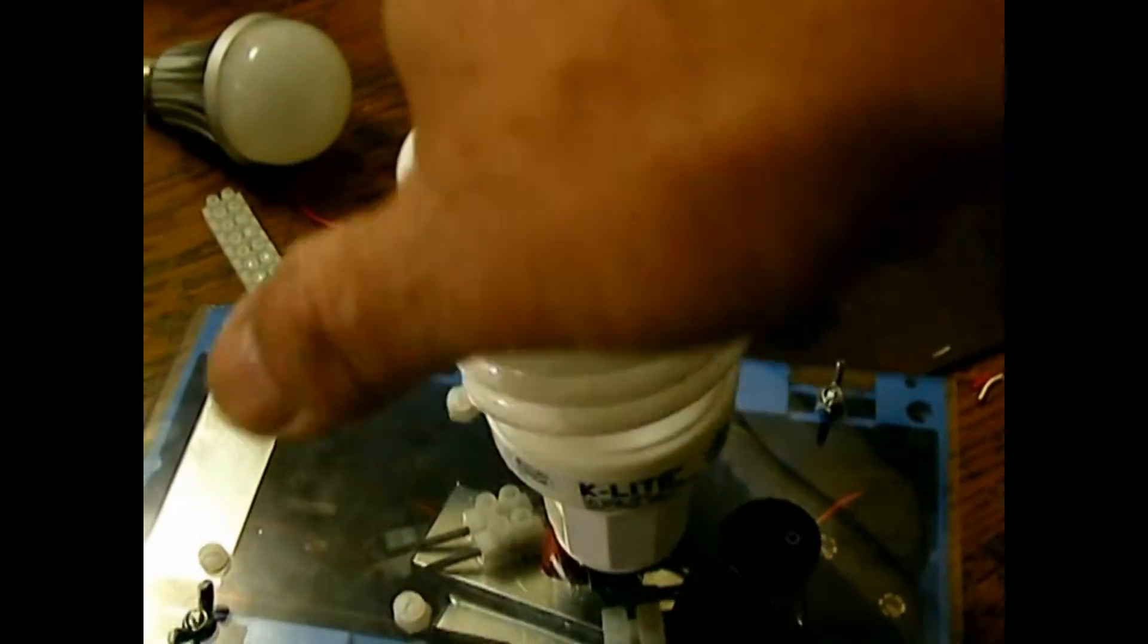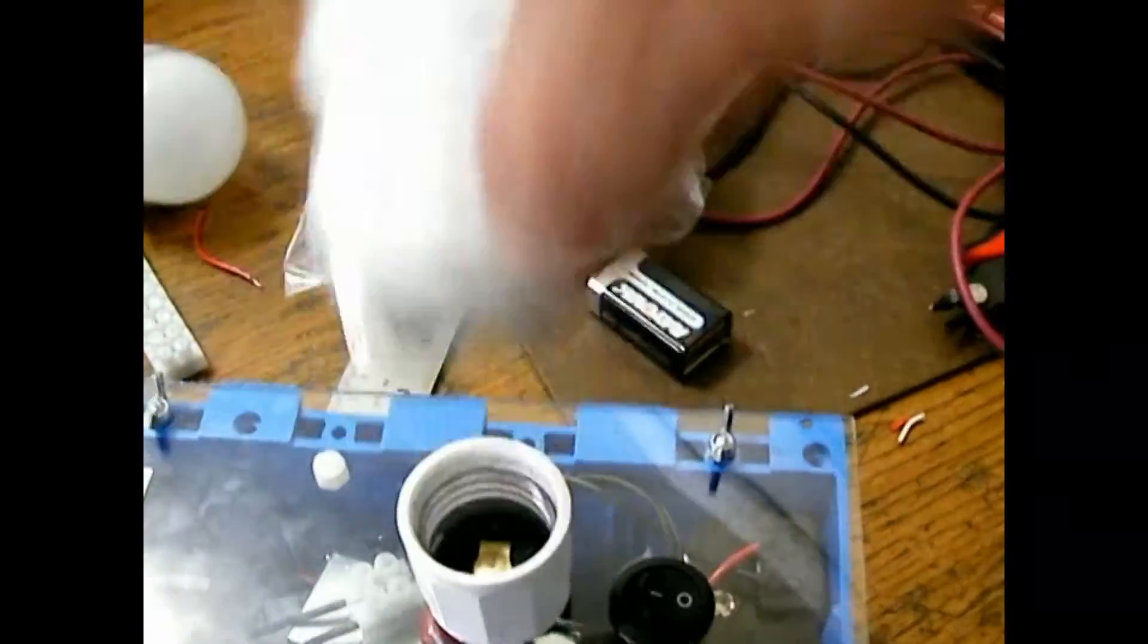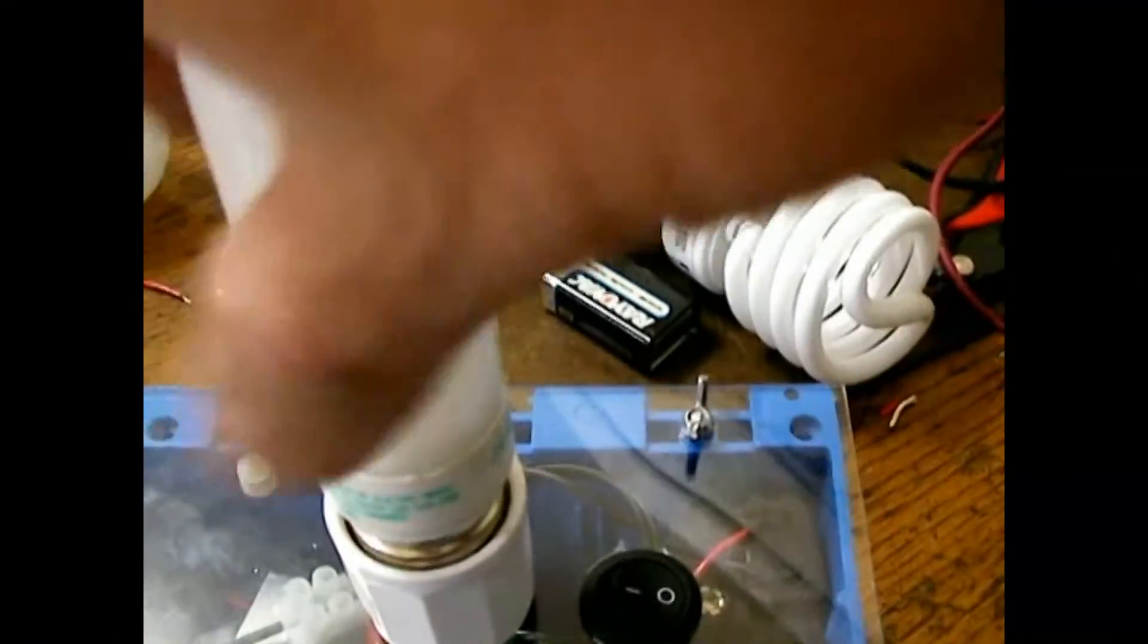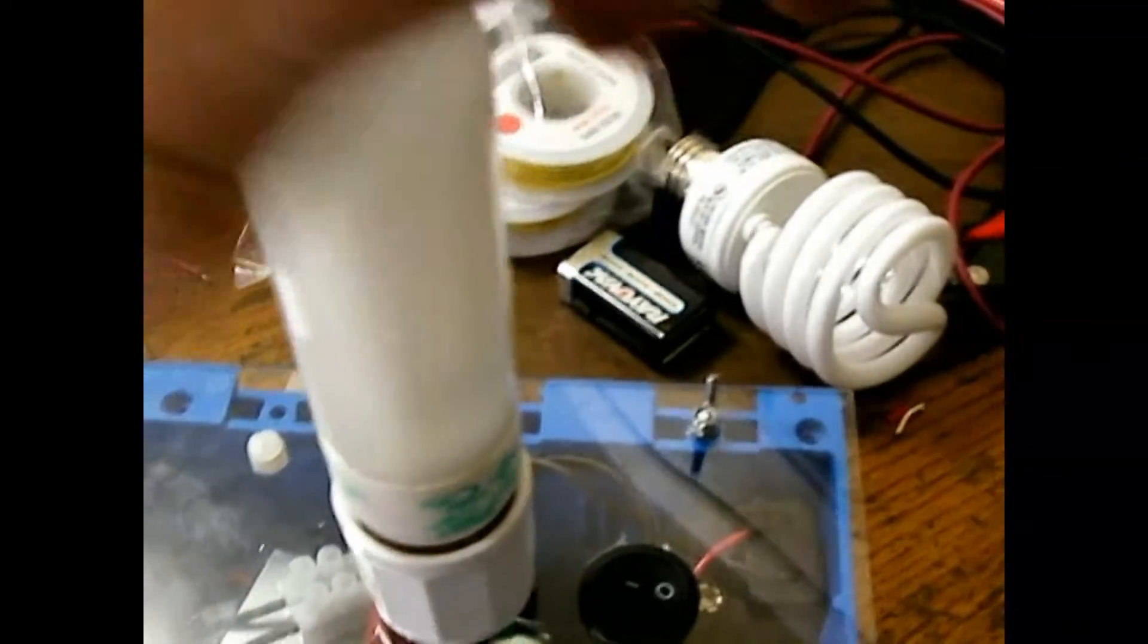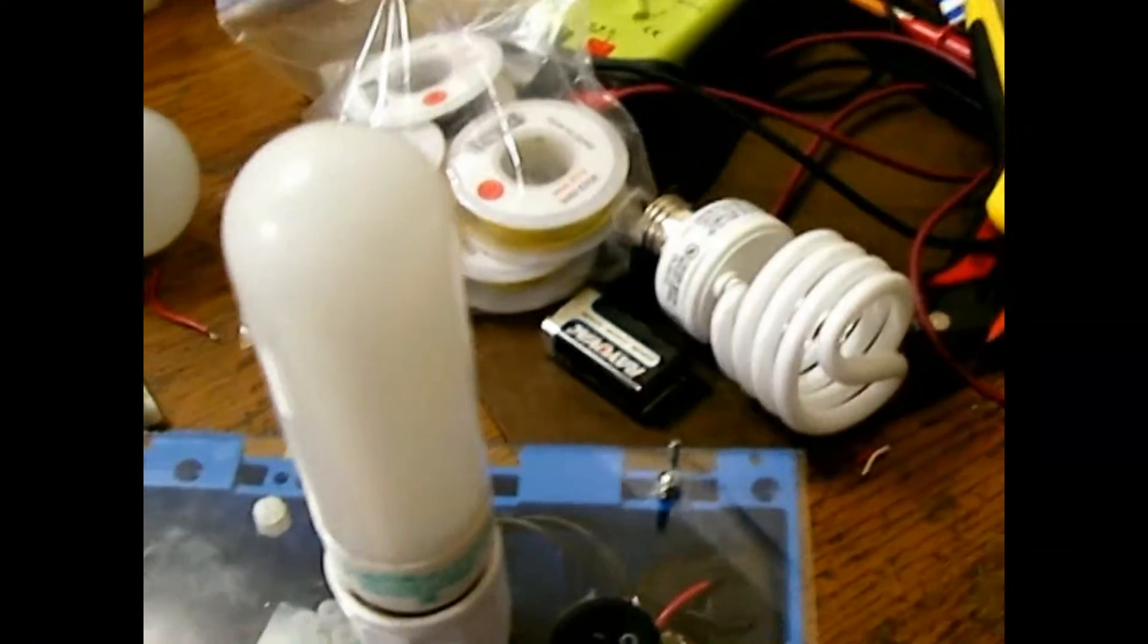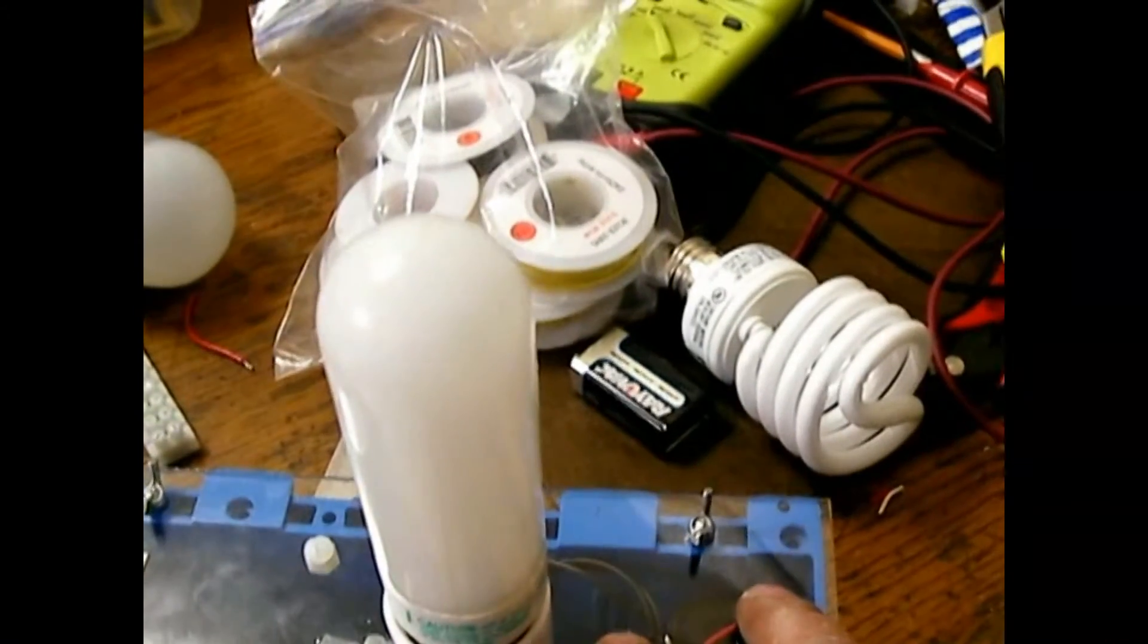Okay, and let's try the smaller one. Oh, this is warm already. Okay, this is another smaller compact fluorescent. These are all unmodified. That means there's no modifications to that.